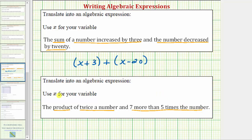The first factor is twice a number, or twice x, which would be two times x, or two x. The second factor is 'seven more than five times a number.' Five times a number would be five x, but we want seven more than that, so the second factor is five x plus seven.